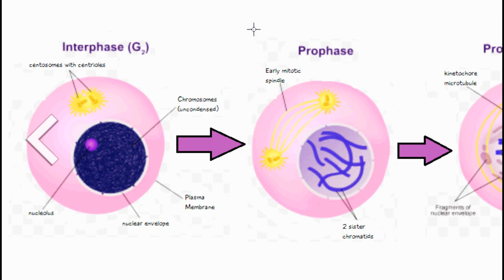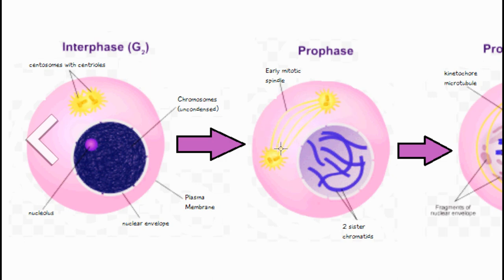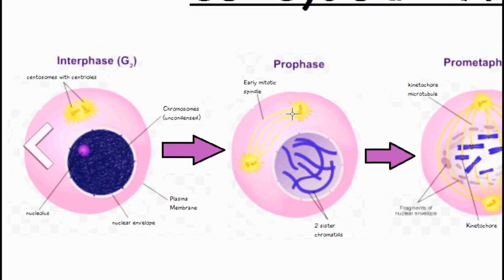The first step of mitosis is called prophase. In this stage the nucleolus, which you can see here, breaks down and the chromosomes condense to form structures called chromatids, which you can see here. Also, the centrosomes start moving to opposite ends of the cell, and we have this mitotic spindle — which is like a microtubule — that starts to form.